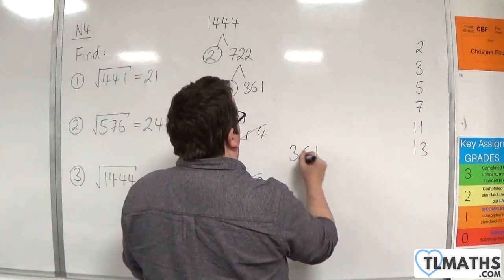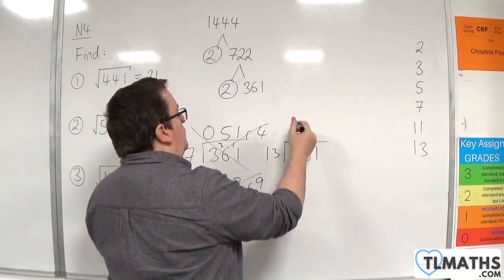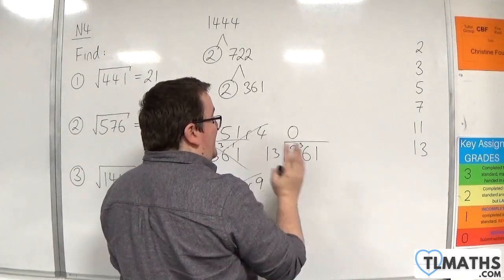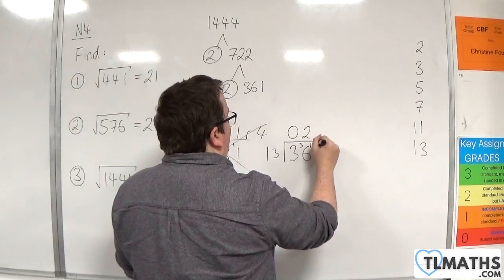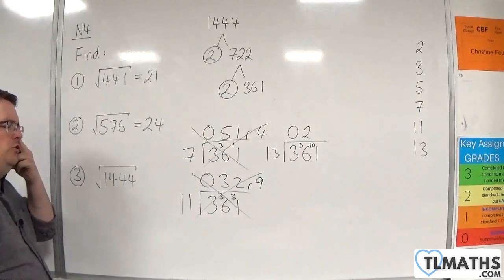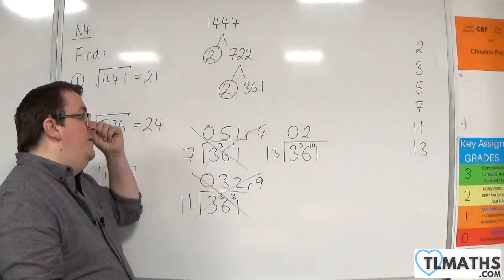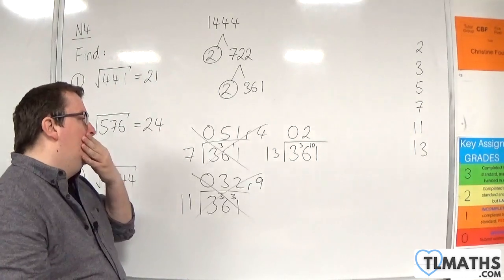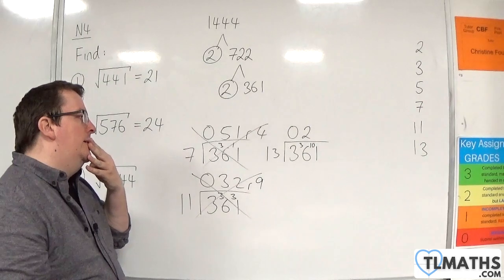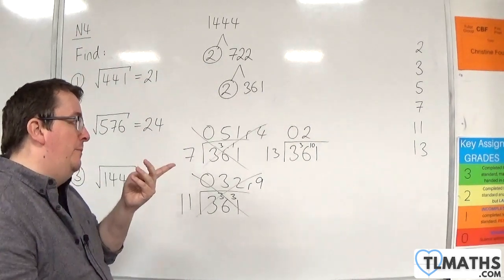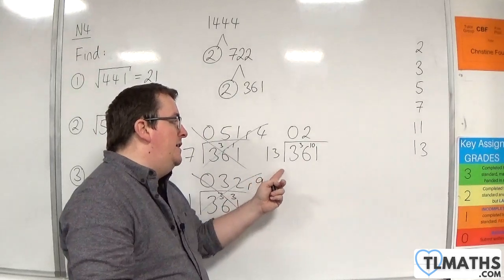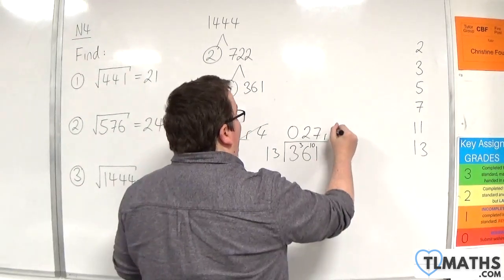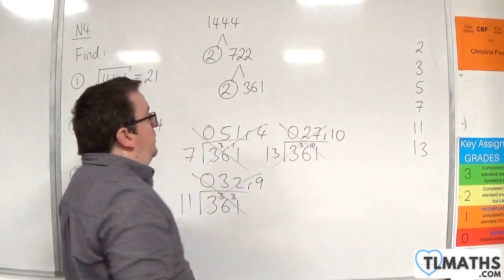What about 13? 13s into 3 goes 0, remainder 3; 13 times 2 is 26, so that's 2 remainder 10; 13s into 101 — well, 7 times 13 would be 91, so I think it's 7, and that would give remainder 10. So that's no good — 13 is out.